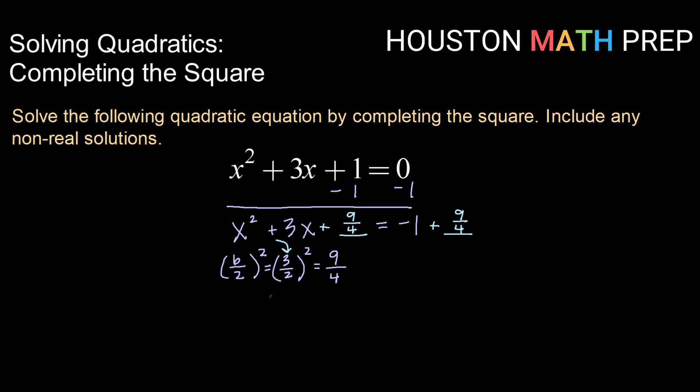After that the process remains the same. Our left hand side is a perfect square trinomial that we can use our middle value to factor through. So this would factor to x plus 3 halves squared.